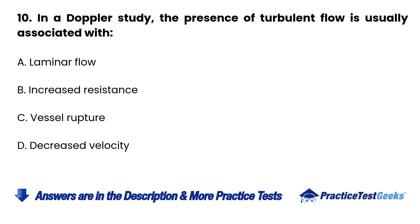Question 10. In a Doppler study, the presence of turbulent flow is usually associated with a laminar flow. (True/False)